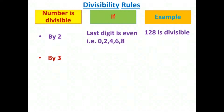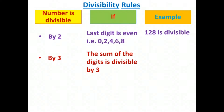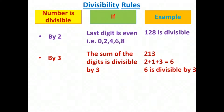The next is the divisibility rule of 3. A number will be divisible by 3 if the sum of the digits is divisible by 3. Here I have taken the example 213. The sum of the digits is 2 plus 1 plus 3 equals 6, and 6 is divisible by 3, so 213 will also be divisible by 3.